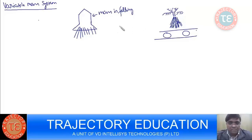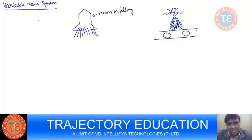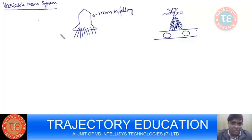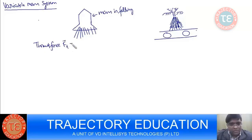In all these cases where mass is getting ejected or mass is getting added, apart from all the real forces you are applying — like Mg, normal reaction, and so on — you apply one more force which is called Thrust force. The Thrust force Ft is equal to Vr·dm/dt.